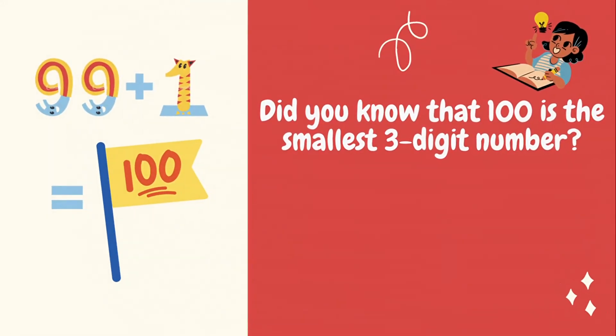So, what is one more than 99? Or what is 99 plus 1? That's right — 99 plus 1 is 100. Did you know that 100 is the smallest three digit number? 99 is the biggest two digit number, and 100 is the smallest three digit number. This is going to come in handy, so remember this.